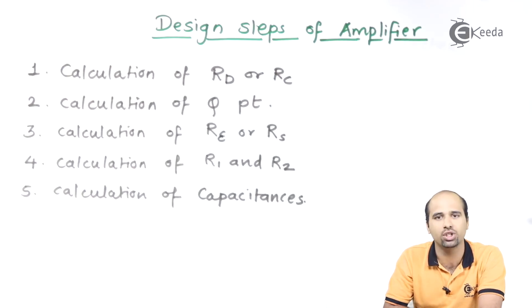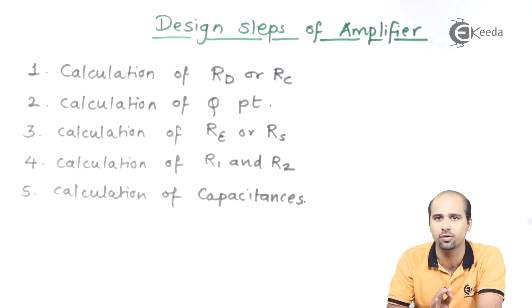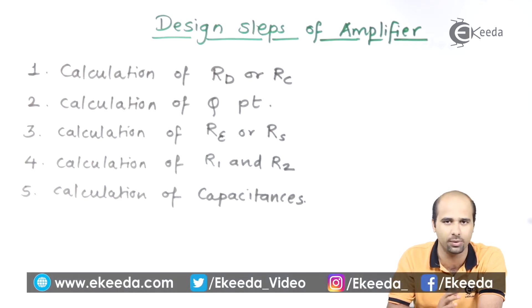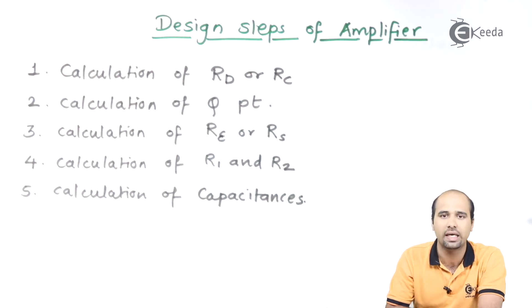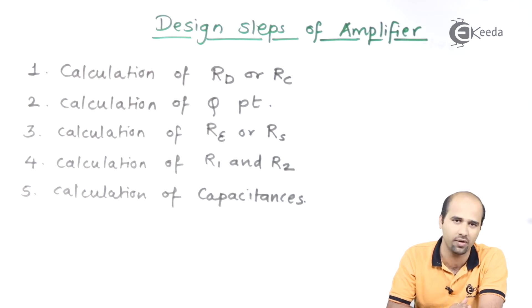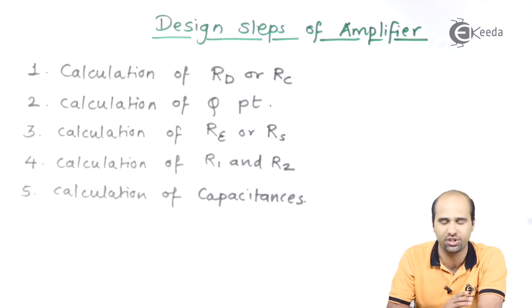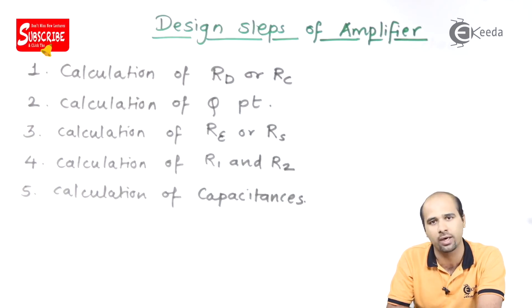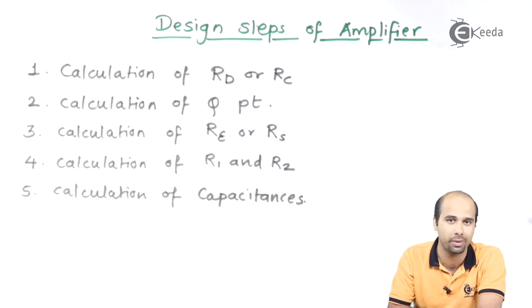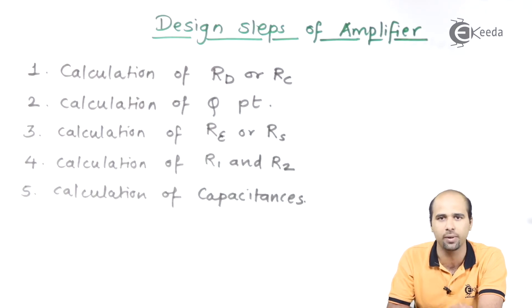The steps we have to follow for design of a multi-stage amplifier: First step is calculation of Rd or Rc — Rd in terms of field effect transistor and Rc in terms of bipolar junction transistor (BJT). Second step is calculation of Q point, and third step is calculation of emitter resistance or source resistance — source resistance in terms of FET, emitter resistance in terms of BJT. Fourth is calculation of R1 and R2, that is input resistance. In terms of FET we directly consider Rg equal to 1 mega ohm. Fifth is calculation of all the coupling capacitors — that is input coupling capacitor, output coupling capacitor, and bypass capacitor if provided to increase the gain.